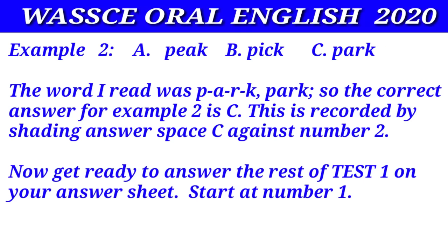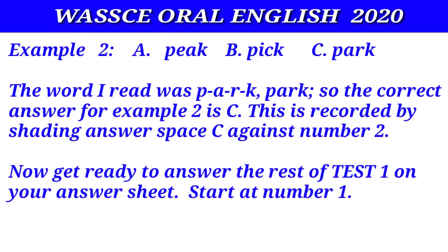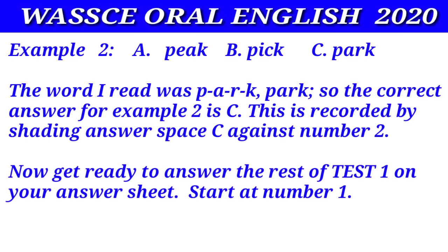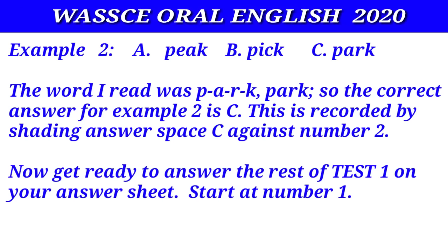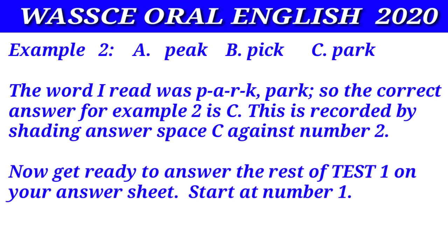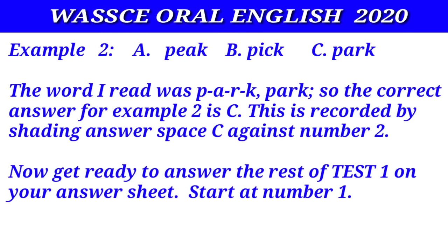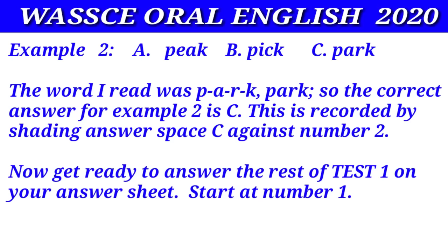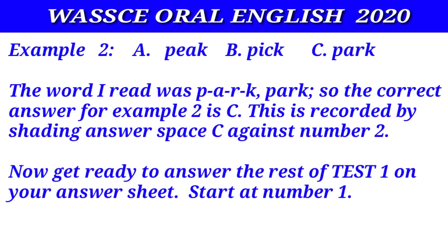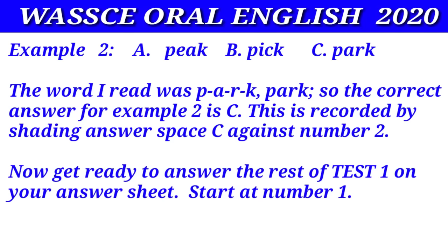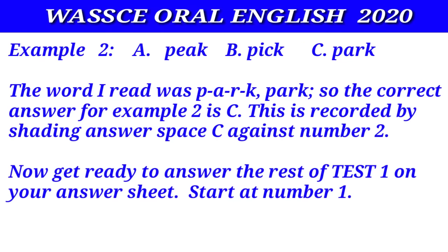Example two: park. The word I read was P-A-R-K, park. So the correct answer for example two is C. This is recorded by shading answer space C against number two. Now get ready to answer the rest of test one on your answer sheet. Start at number one.